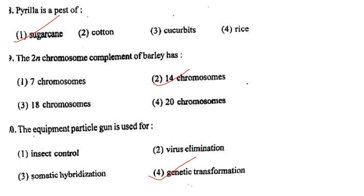Next one: Pyrilla is a pest of option 1, sugarcane; option 2, cotton; option 3, cucurbits; option 4, rice. Answer is option 1: sugarcane.